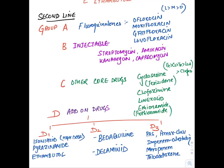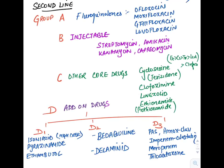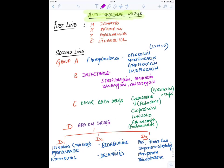Group D drugs are given in XDR-TB (extremely drug-resistant TB) — they are add-on drugs and should never be given as a single agent. D1 are older drugs: isoniazid, pyrazinamide, ethambutol. D2 are new drugs for MDR and XDR-TB: bedaquiline and delamanid — very important to remember. D3 are agents with unproven efficacy, mnemonic PAIMED: PAS, amoxicillin-clavulanate, imipenem-cilastatin combination, meropenem, and thioacetazone.